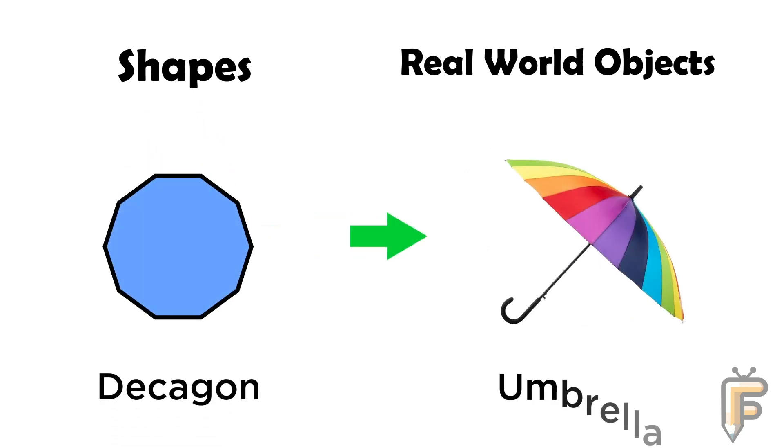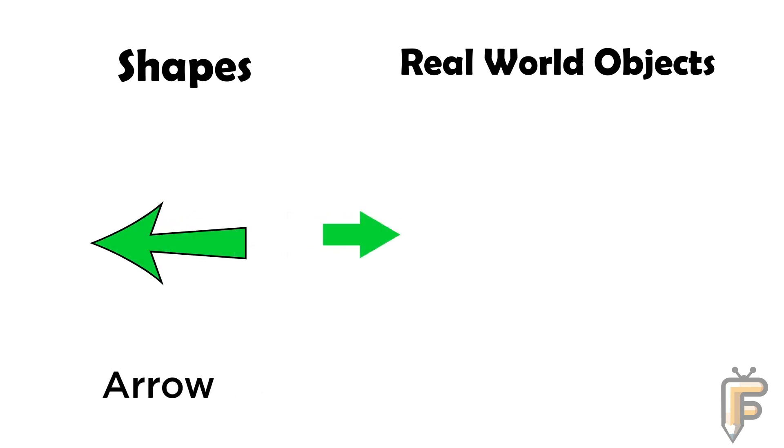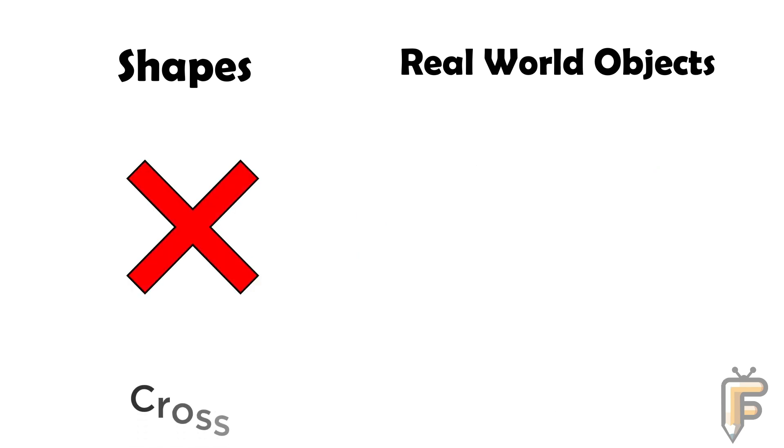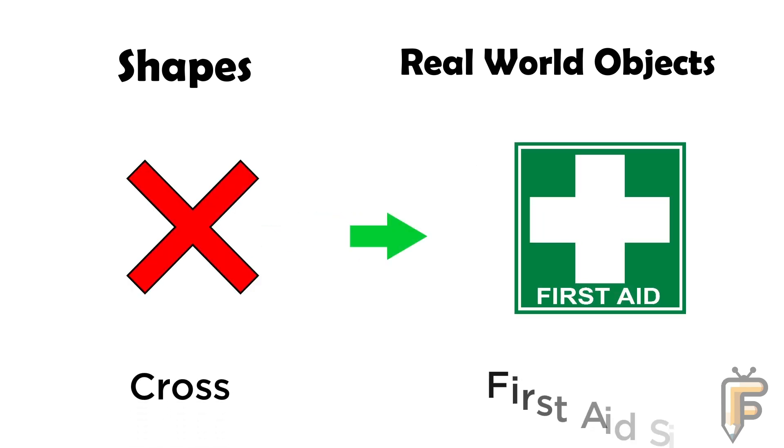Decagon: umbrella is decagon shape. Arrow: road direction sign is arrow shape. Cross: first aid sign is cross shape. Spiral.